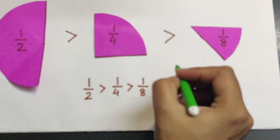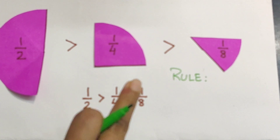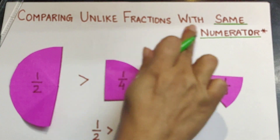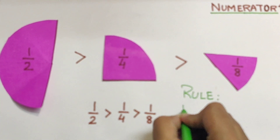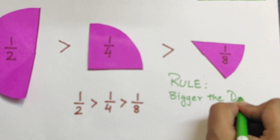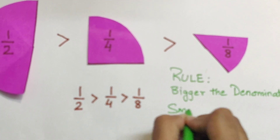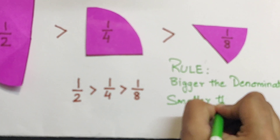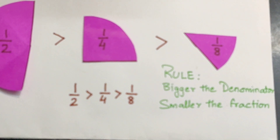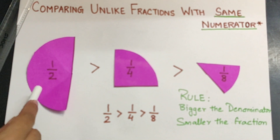So the rule says: bigger the denominator, smaller the fraction. With the category of unlike fractions with the same numerator, the rule says bigger the denominator, smaller the fraction. That means the fraction with the biggest denominator will be the smallest one, and the fraction with the smallest denominator will be the biggest one.